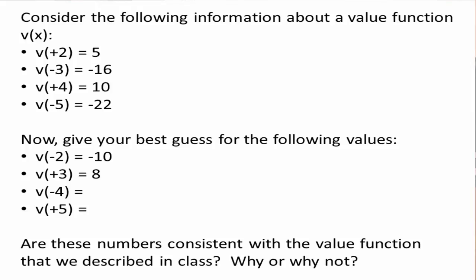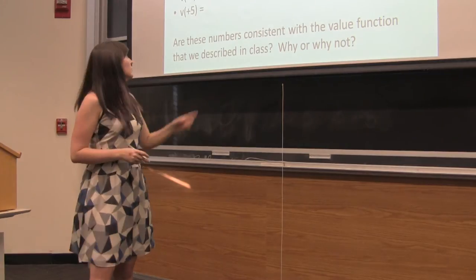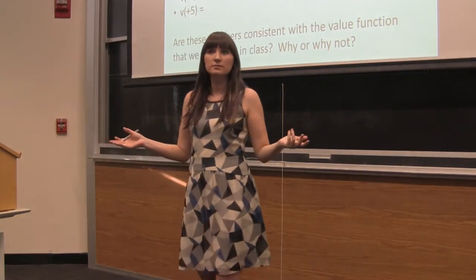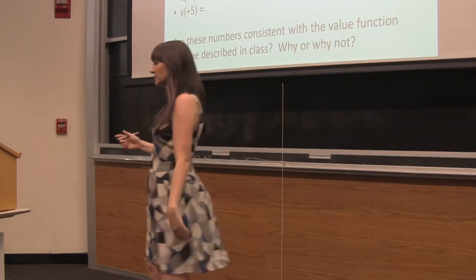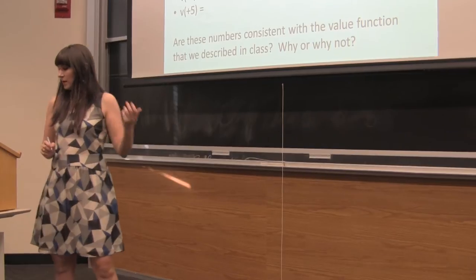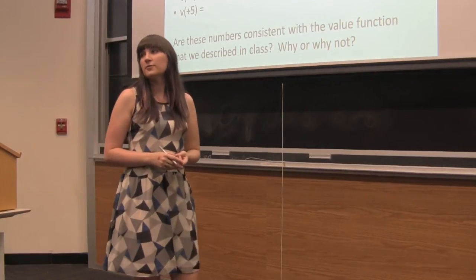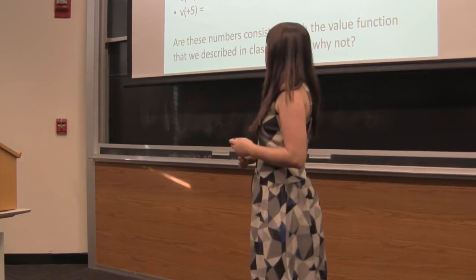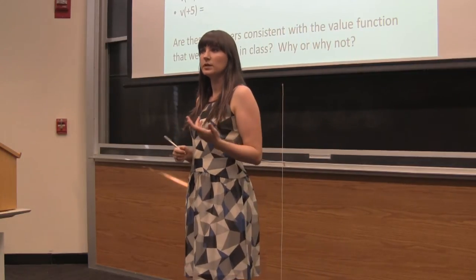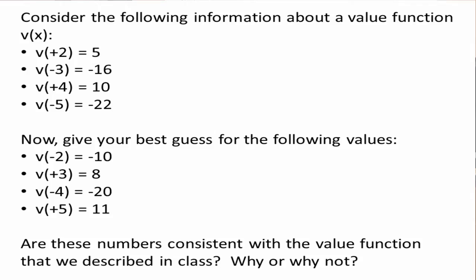So this one would be 8. If the value of plus 4 is 10, then the value of minus 4 is negative 20. And if the value of a loss of 5 is negative 22, then the value of a gain of 5, we can guess, would be 11. Good.